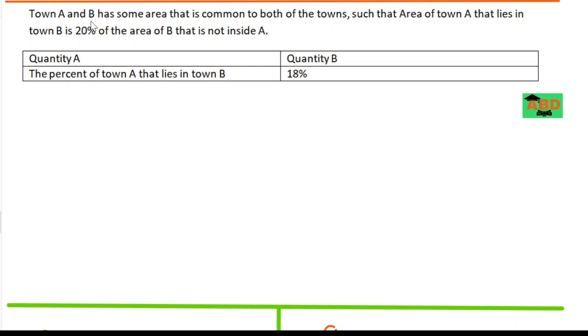Town A and town B have some area that is common to both towns. So I'm able to imagine and visualize two areas which have a common intersection and overlap, such that the area of town A that lies in town B is 20% of the area of B that is not inside A. Okay, so there's a lot of information and I think it would be best if I start by drawing a diagram.